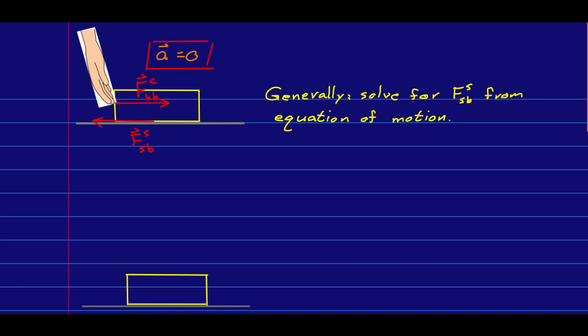So in general, the way we solve for the magnitude of a static friction force is to write down the equation of motion for the object and solve for the static friction force out of that.